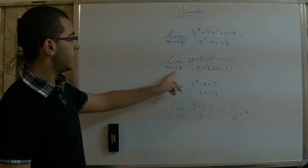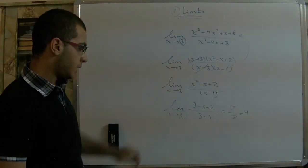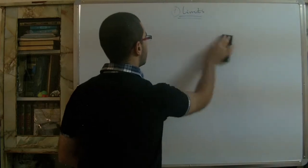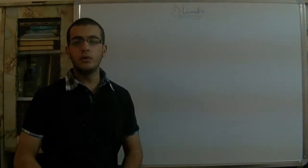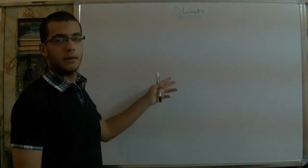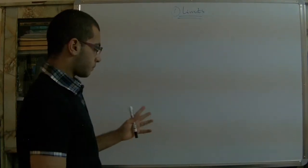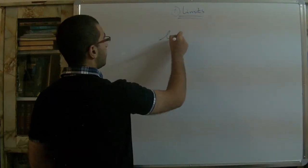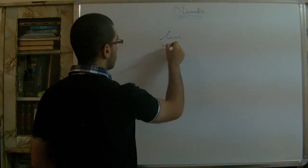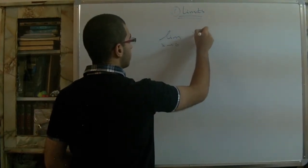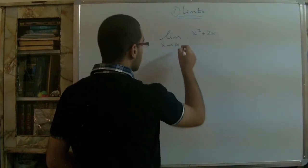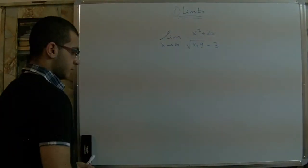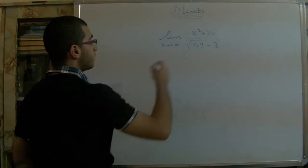We found that (x − 3) is a factor of both the numerator and denominator. Another rule in our lesson: if we have roots in our function's numerator or denominator, we multiply the function by the conjugate of the denominator. For example, consider the limit as x approaches 0 of (x² + 2x) over (√(x + 9) − 3).